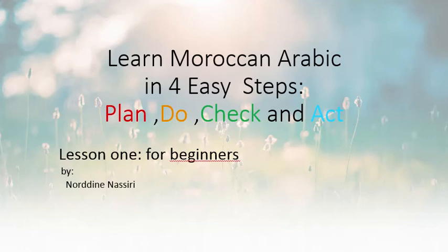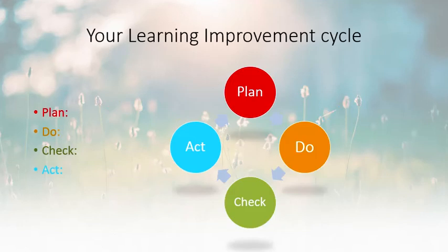This is lesson number one: Your learning improvement cycle. Step number one — Plan — in red. Step number two — Do — in orange. Step number three — Check — in green. And the last step — Act — in blue.